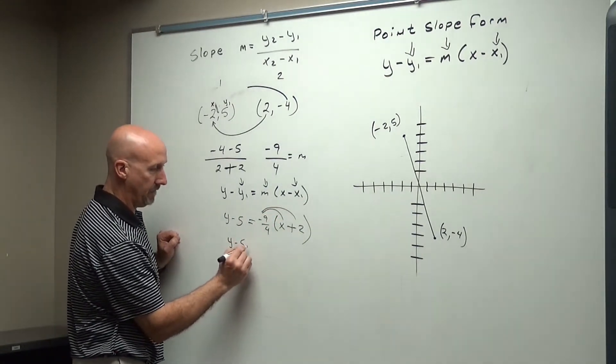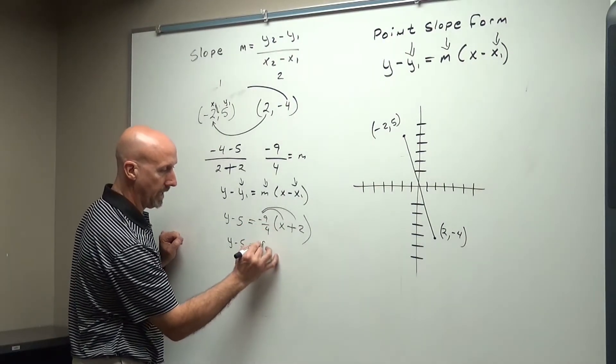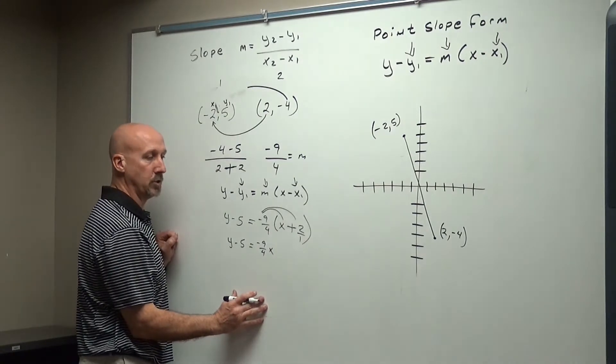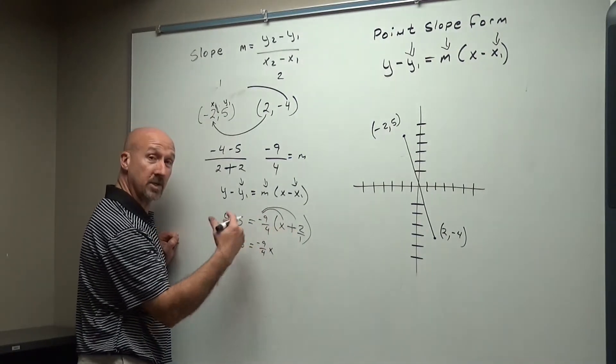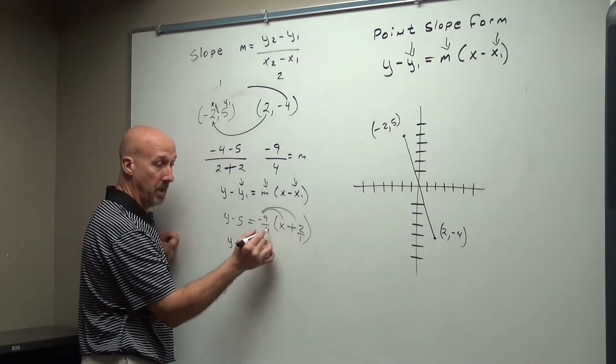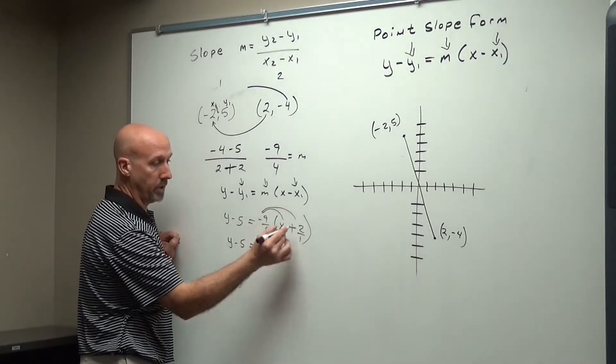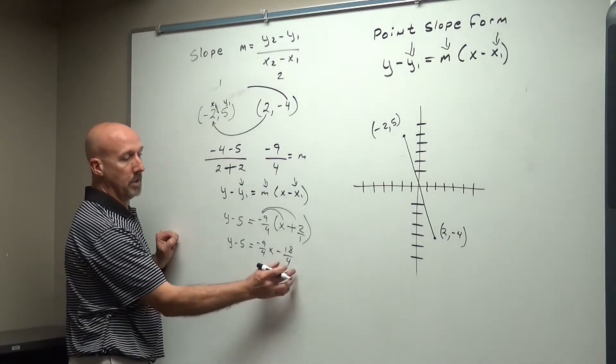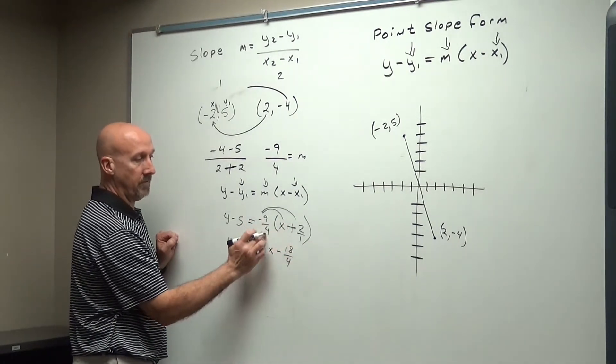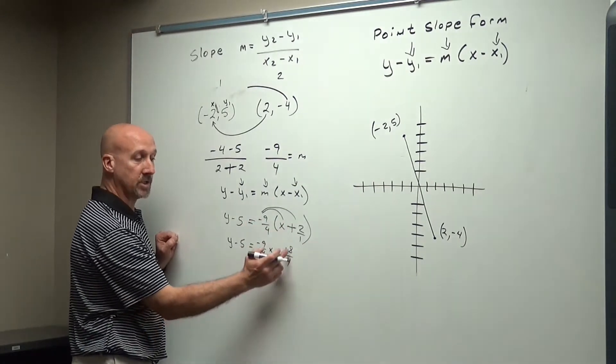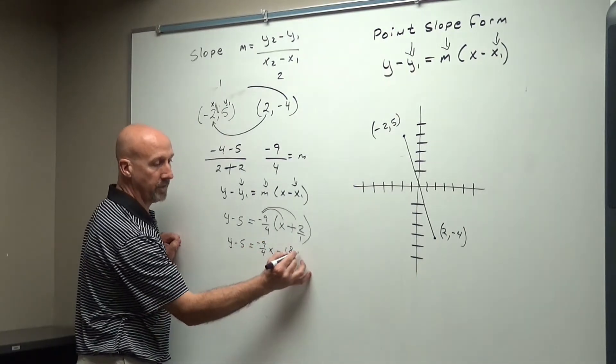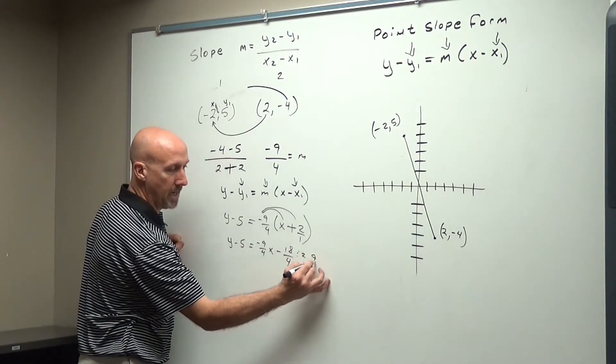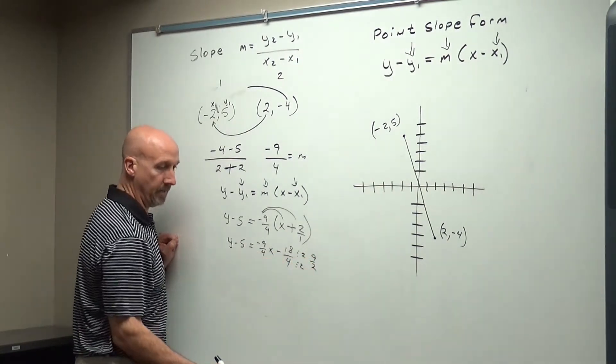Distributive property. So I have y minus 5 equals, distribute to here, negative 9 over 4x. Do the math here. Again, that's 2 is like 2 over 1. You can simplify if you want ahead of time by cross-reducing, or you can go ahead and take it over the top, which I'm going to do to start with. 18 over 4. 9 times 2 is 18. 4 times 1 is 4. Now simplify this. It's going to help you a lot afterwards. Both of these divide by 2, which gives me 9 over 2, and I'm going to write that in that spot right there.